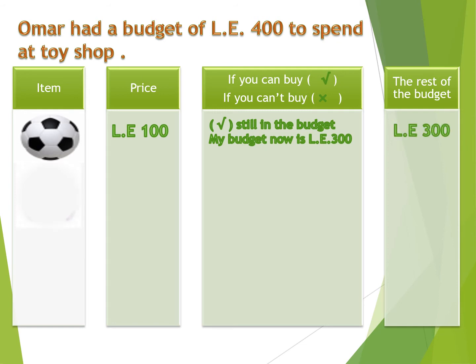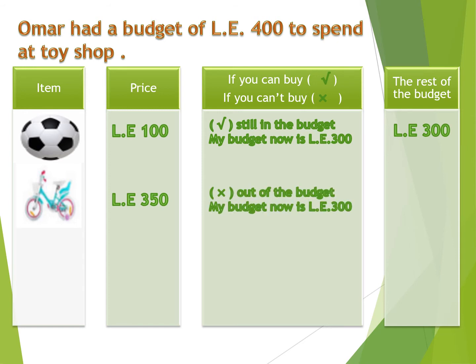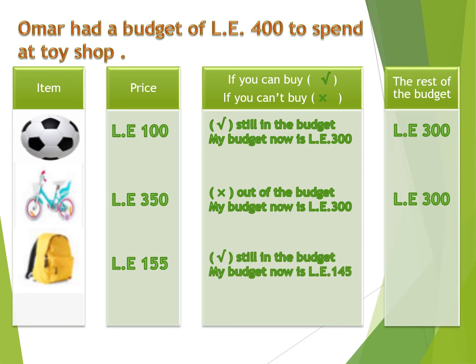Second item: a bike. Its price is 350 pounds. I only have 300, so make a cross — out of the budget. My budget remains 300. Third item: a backpack. Its price is 155 pounds. My budget is 300, so yes, I can buy it. Make a tick — still in the budget. My budget is now 145 pounds: 300 minus 155 equals 145.